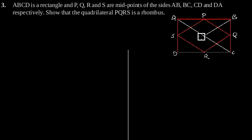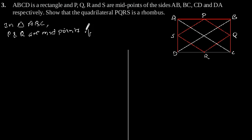Now considering triangle ABC. In triangle ABC, P and Q are midpoints of AB and BC respectively.